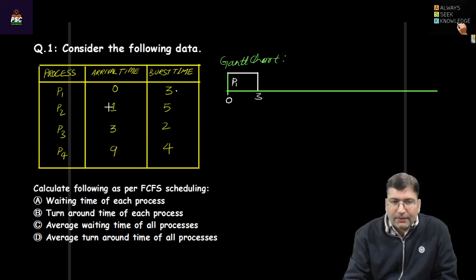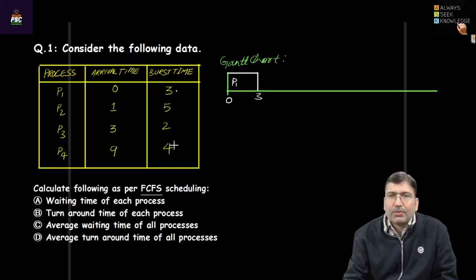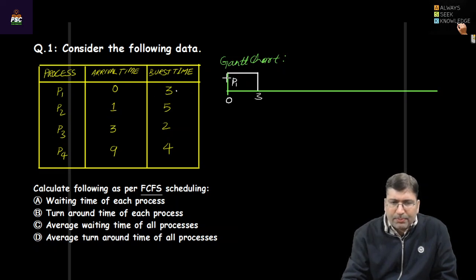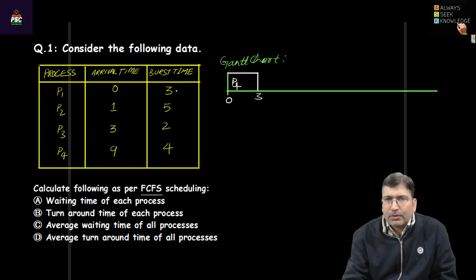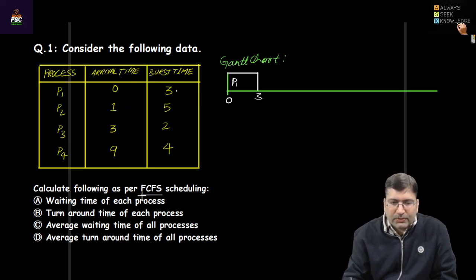By time 3, P2 and P3 have arrived in the ready queue. Although P2 and P3 have arrived, P1 was not interrupted because FCFS is a non-preemptive CPU scheduling algorithm. When a scheduling algorithm is preemptive, the scheduler can be called upon a new arrival, but not here. Since it is First Come First Serve and P2 arrived earlier than P3, P2 will be scheduled next.